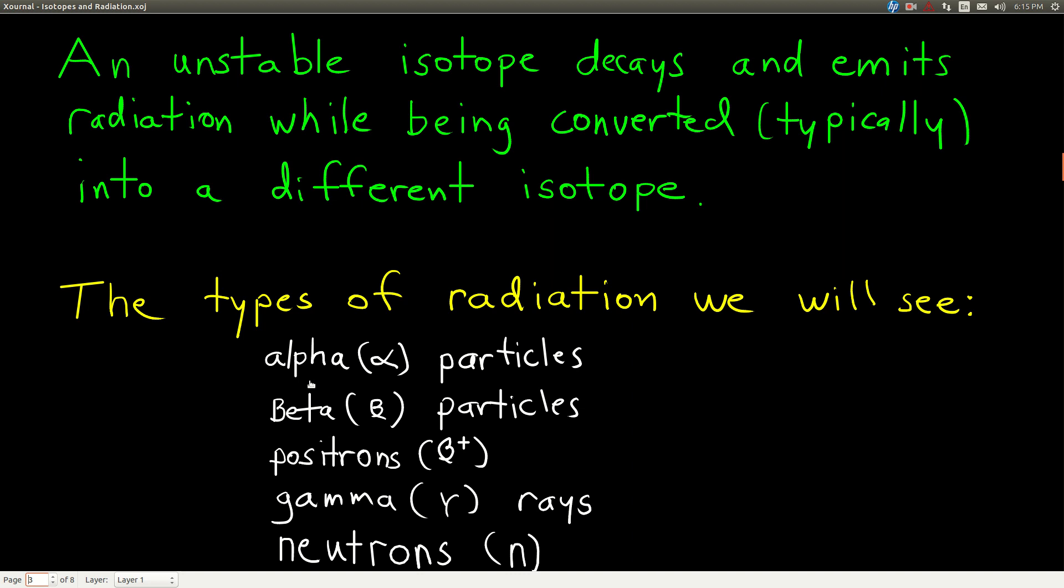And the types of radiation we're going to look at in this course are called alpha particles, beta particles (this is supposed to be a Greek beta, by the way, and that's supposed to be an alpha), positrons (that's supposed to be a beta with a plus sign), gamma rays (that's supposed to be a gamma), and neutrons.